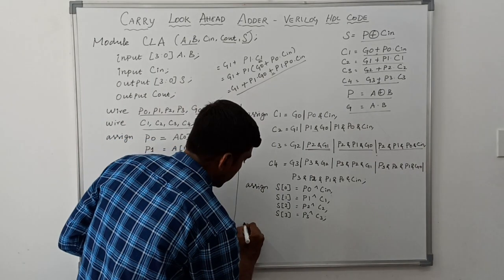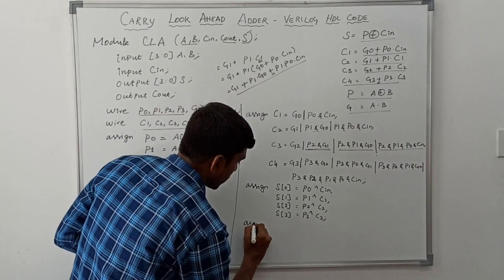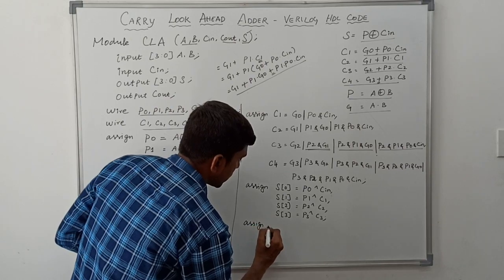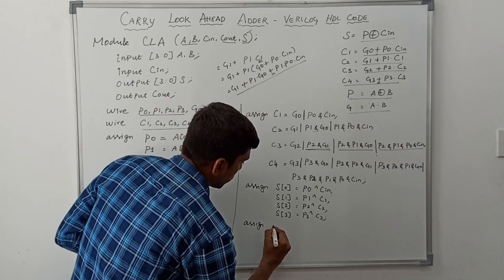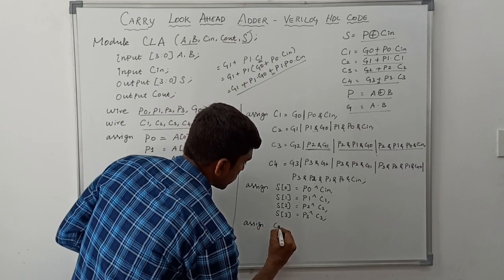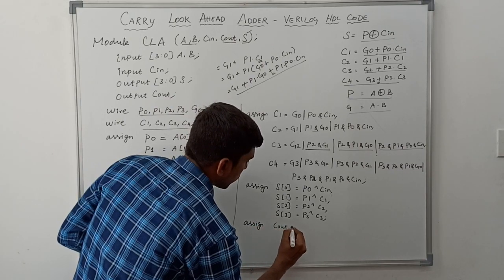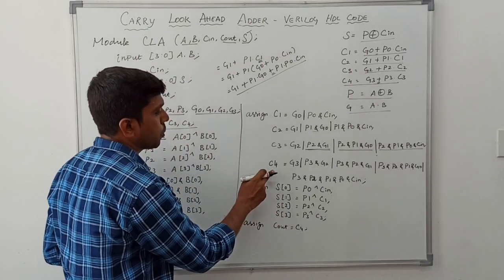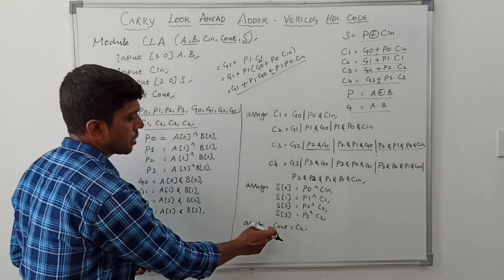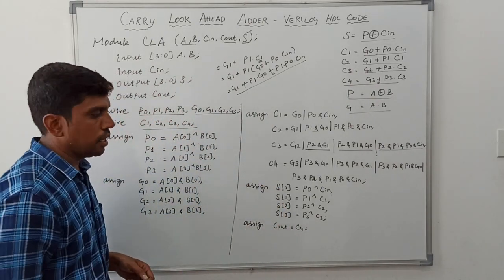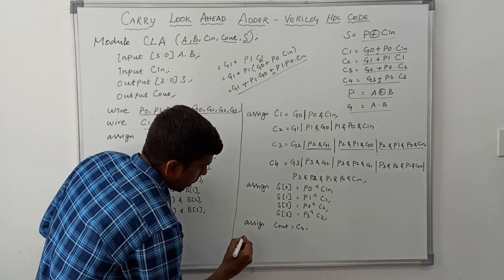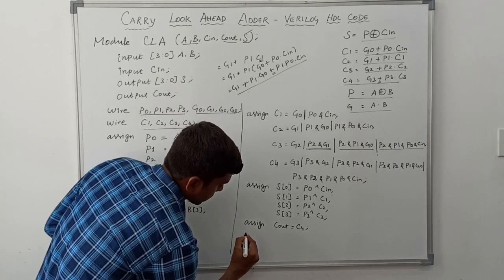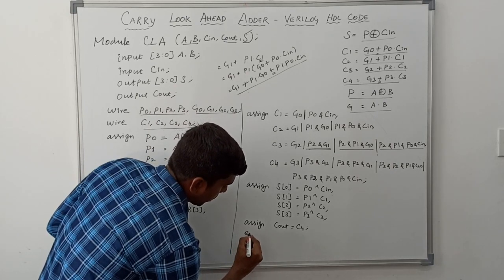Finally we find the carry out. assign Cout = C4. This C4 value is assigned to carry out. I close the module using the instruction endmodule.